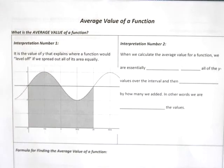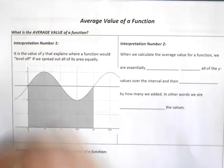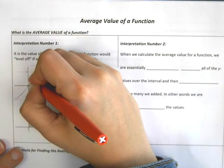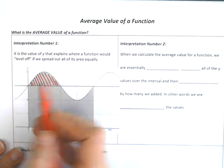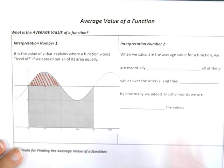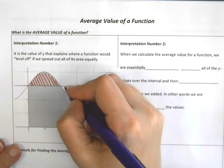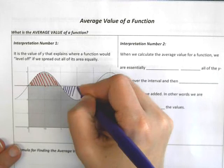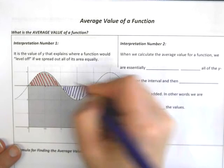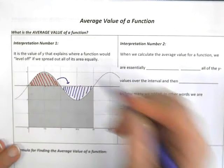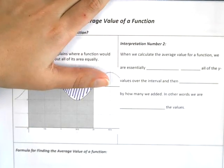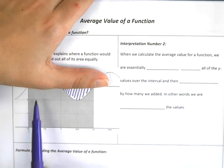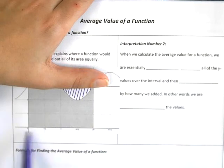The way we can visualize that is that this extra area above the average value line would perfectly fill in the area below that line — it would sort of dump into there. What that would do is create a rectangle that is the same height all the way across, evenly spreading out that area over this distance.